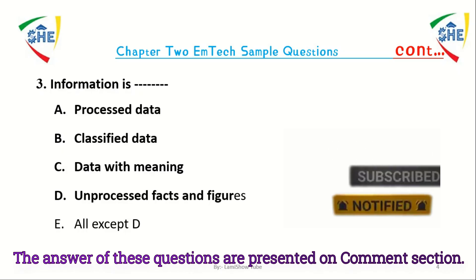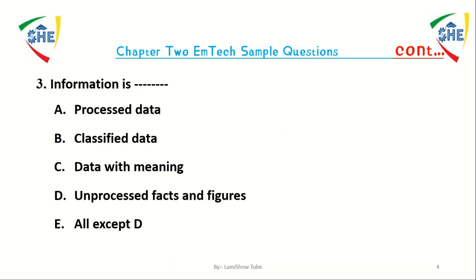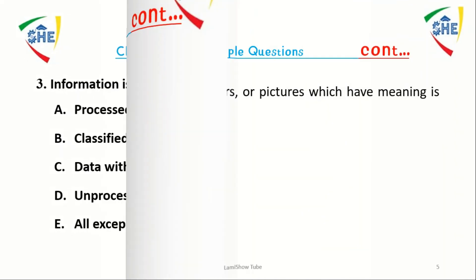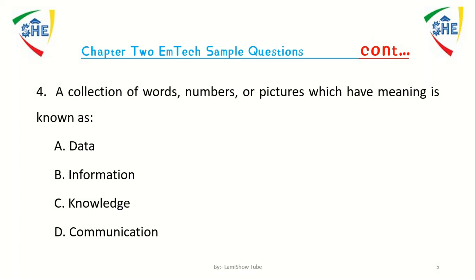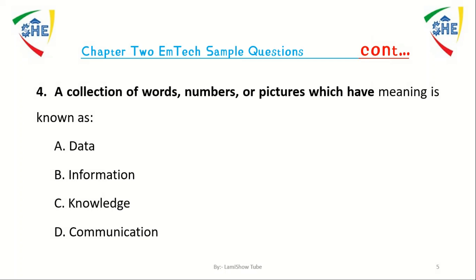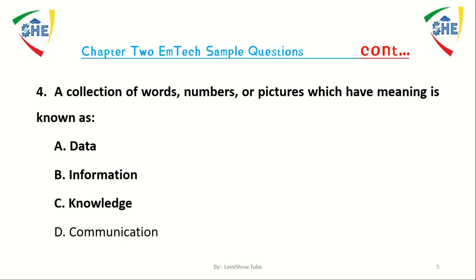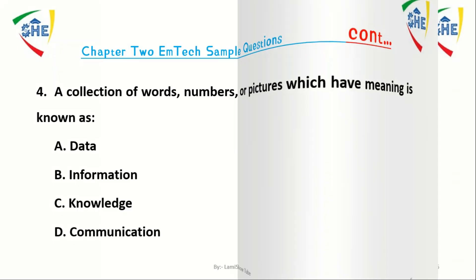Question number 4: A collection of words, numbers or pictures which have no meaning is known as dash. A) Data, B) Information, C) Knowledge, D) Communication.